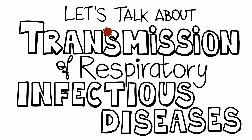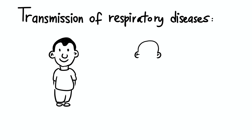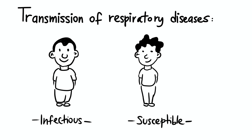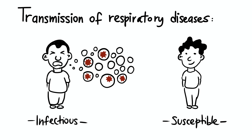Let's talk about transmission of respiratory infectious diseases. Respiratory infections are transmitted between two people when one is infectious and the other susceptible to infection. When the infected person talks or coughs, they release a mist of particles made out of respiratory fluid that contains the virus. They can throw between 900 and 300,000 liquid particles from their mouth.